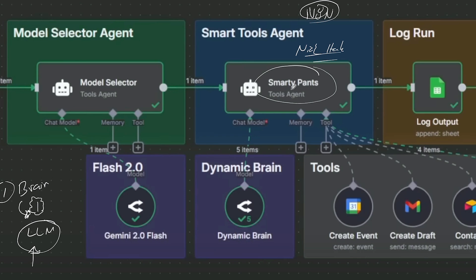What this specific agent does is it picks its own brain. Based on the user input, it selects the best brain for the task — how awesome is that? And then I think this creates calendars — creating events and message search. So it picks the right tool.